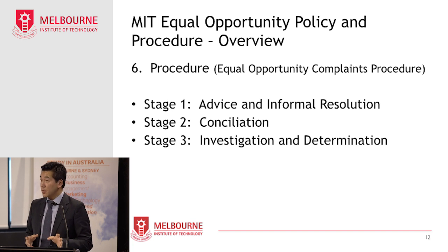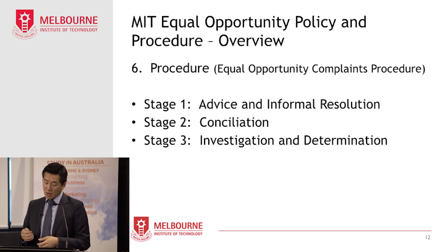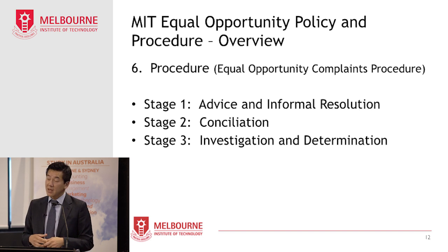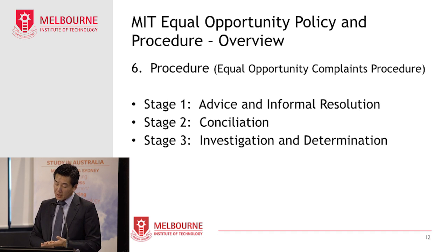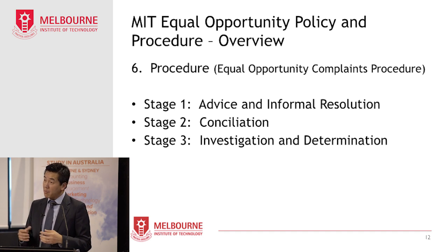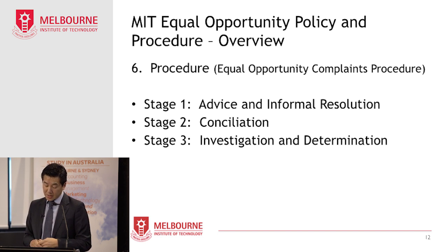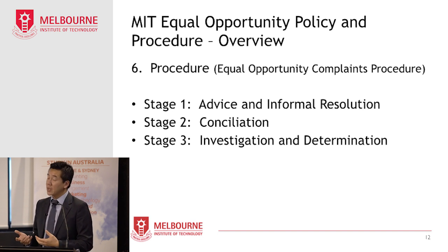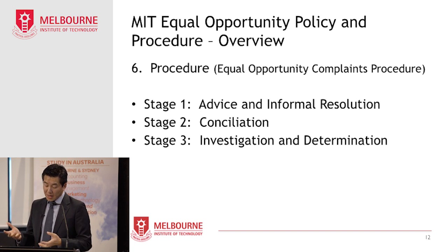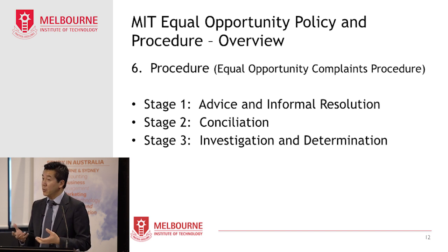If the complaint can't be resolved at stage one, you can request for it to proceed to stage two — conciliation. This involves lodging a written complaint with a senior officer at MIT with a request for conciliation. The written complaint must set out details of the incident. The senior officer reviews the complaint and, if conciliation is determined as appropriate, will invite both parties to participate and appoint a conciliator. The respondent is given an opportunity to provide a written response. Conciliation only occurs if both parties agree, and it involves helping the parties reach a mutually agreed resolution without the conciliator making a formal finding.